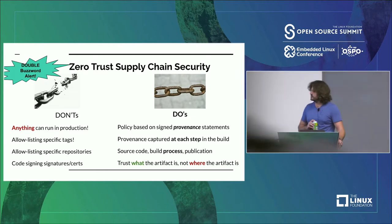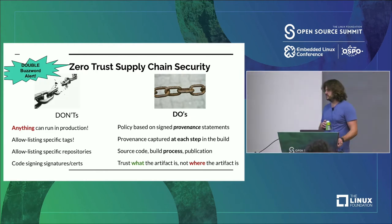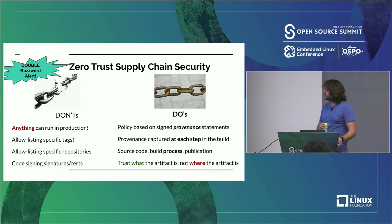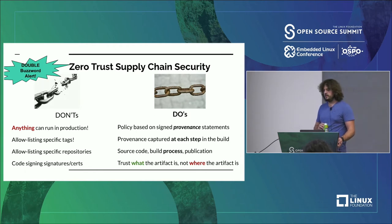We want to base our policy on where an artifact came from and how it was produced, and capture this at every step of a build. Builds are recursive, builds have multiple steps — this applies to dependencies as well. We have to do it recursively and capture provenance at every single step. We can't do it just once at the very end. This applies to the source code, the build process, the publication process — everything. When we sum this up, we get a system where we can trust what the artifact is and how it came to be, not where it is at any given moment. That's the big distinguishing characteristic between zero trust and non-zero trust.